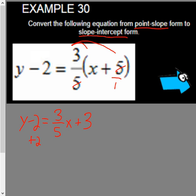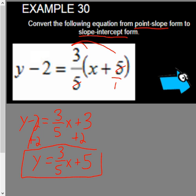Now we're going to add 2 to both sides. So we get y equals 3 over 5x plus 5, and this is our answer changed to slope intercept form.